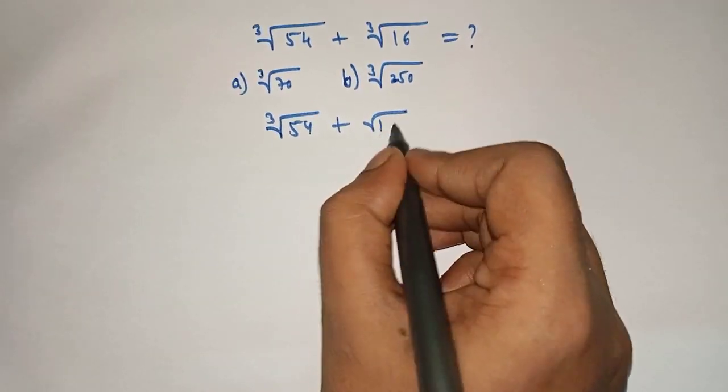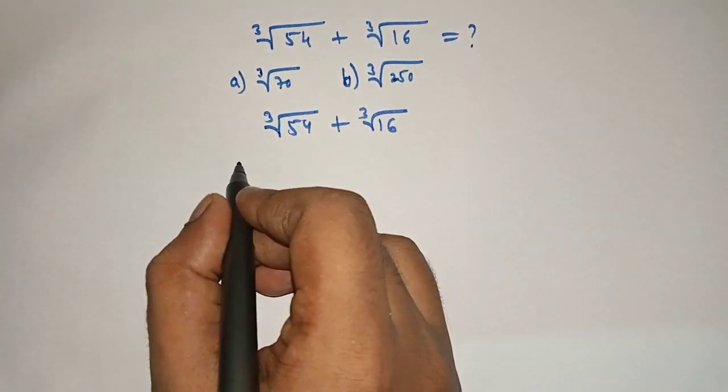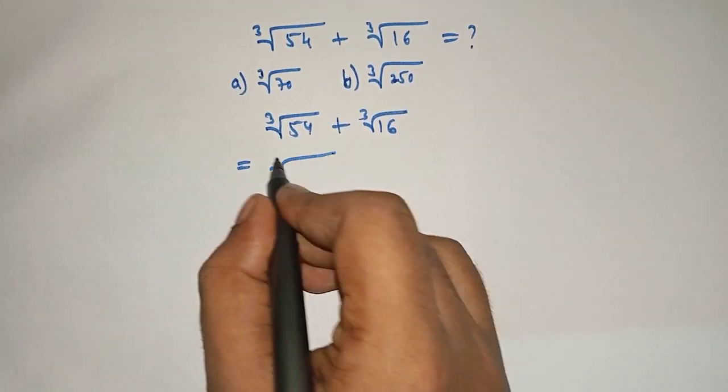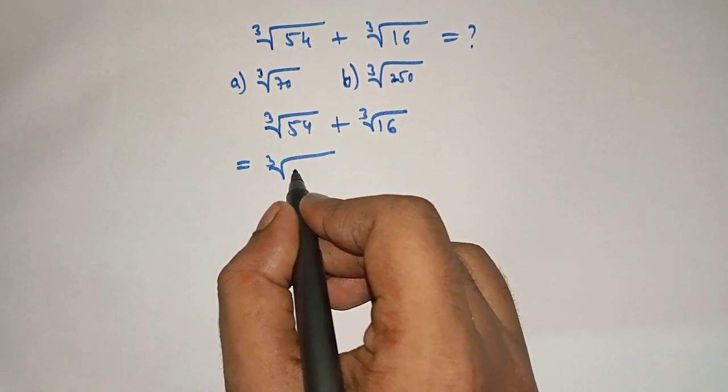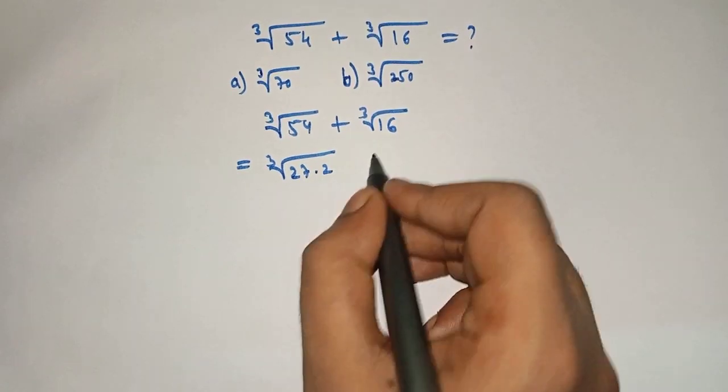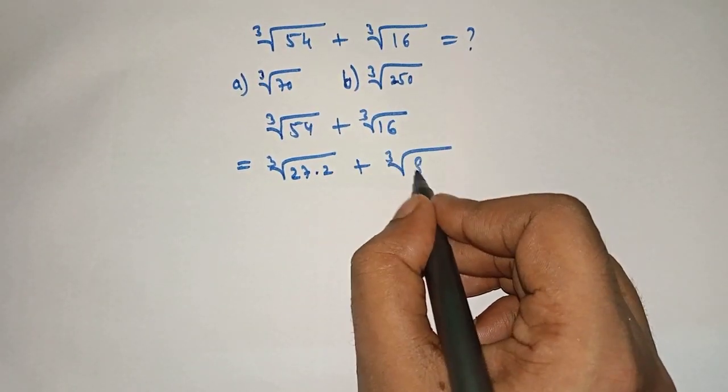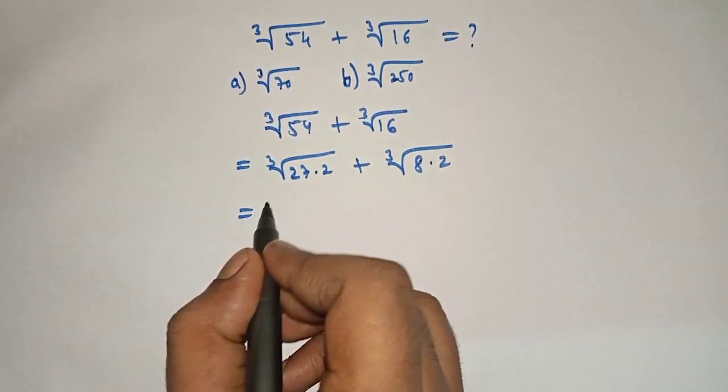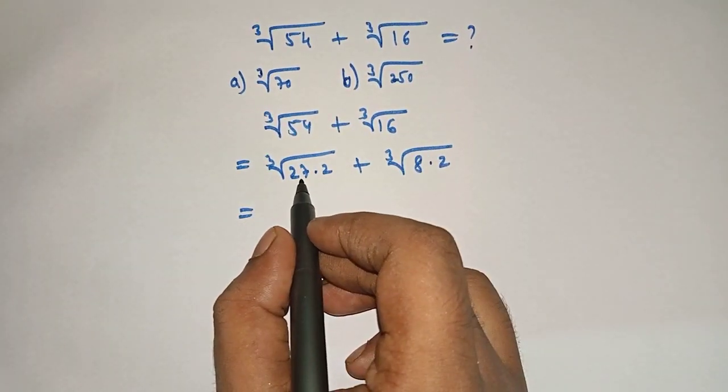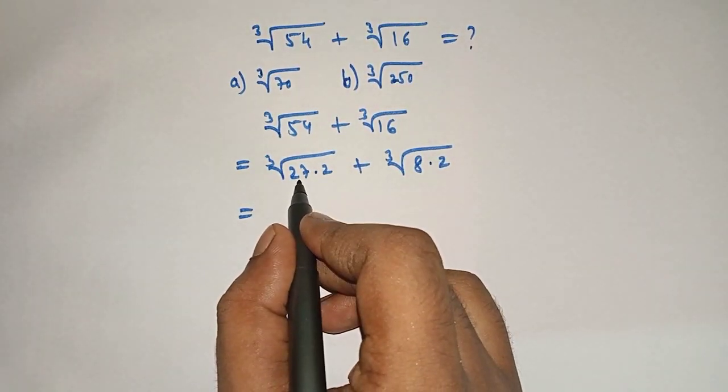Cube root of 54 plus cube root of 16 is equal to cube root of 54 can be written as 27 into 2, plus cube root of 16 can be written as 8 into 2. Now it will be equal to what is cube root of 27?